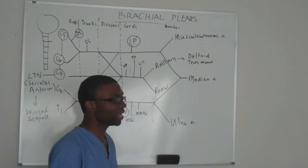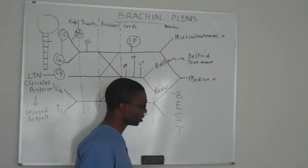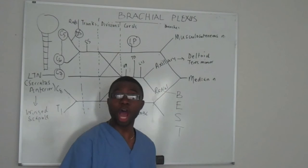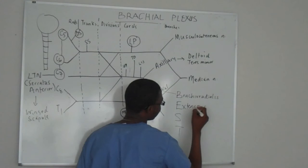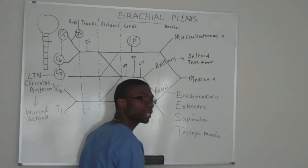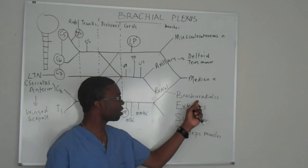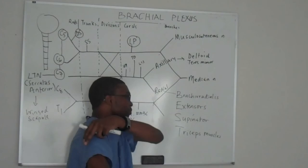The radial nerve — this is the best nerve. It is literally the best nerve. Why? Because of what it innervates. Brachioradialis, all the extensor muscles of your hands, your supinator, and your triceps muscle. It takes over the brachioradialis right there over your arm, all the extensor muscles, your supinator, and your triceps.